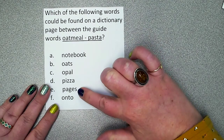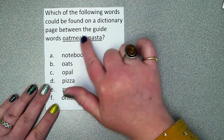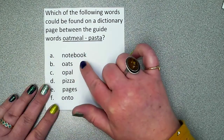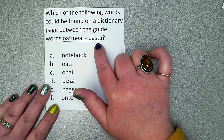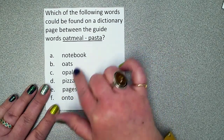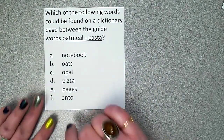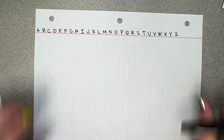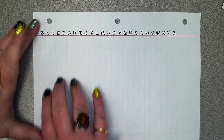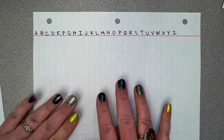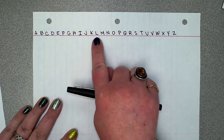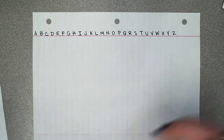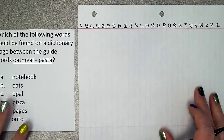We have to decide which of these words would fit on that page between oatmeal and pasta. Some words come alphabetically before oatmeal, some come after pasta, but some are going to fit right in between — and that's what we're trying to find out. You're going to need a piece of notebook paper turned sideways so the lines go up and down to keep you organized. Then write your ABCs going across the top of your page as a cheat sheet.